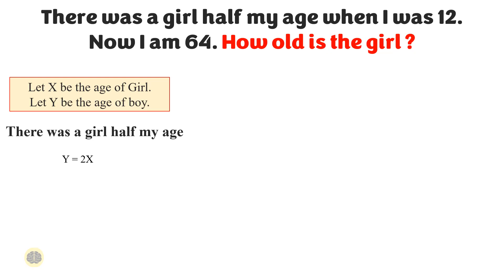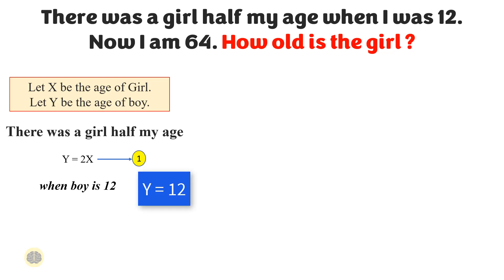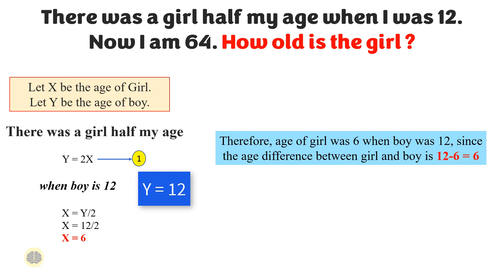Now consider the scenario at the age of 12. When the boy is 12, that is Y equals 12. Using equation 1, X equals Y over 2, and X equals 12 over 2, so X equals 6. The girl's age will be 6. Therefore, the age of the girl was 6 when the boy was 12.